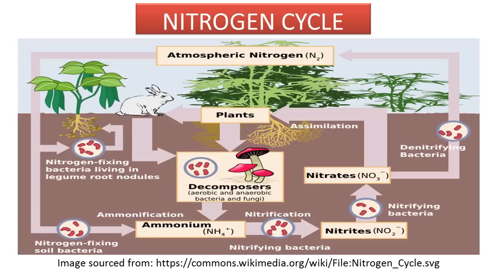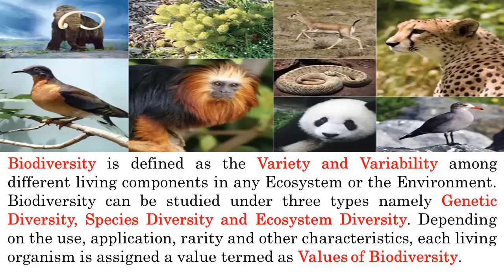Familiarize yourself with a diagram or flowchart that helps you illustrate the nitrogen cycle. This concludes most of what sums up the portion on environment and ecosystem. Biodiversity is defined as the variety and variability among different living components in any ecosystem or the environment. Biodiversity can be studied under three types: genetic diversity, species diversity and ecosystem diversity.